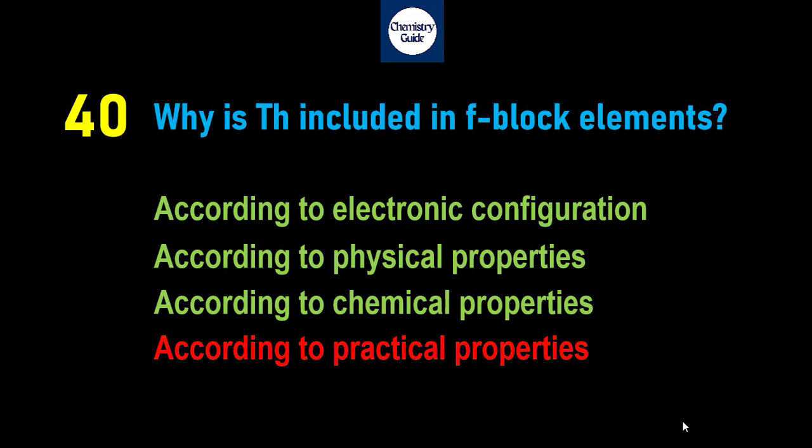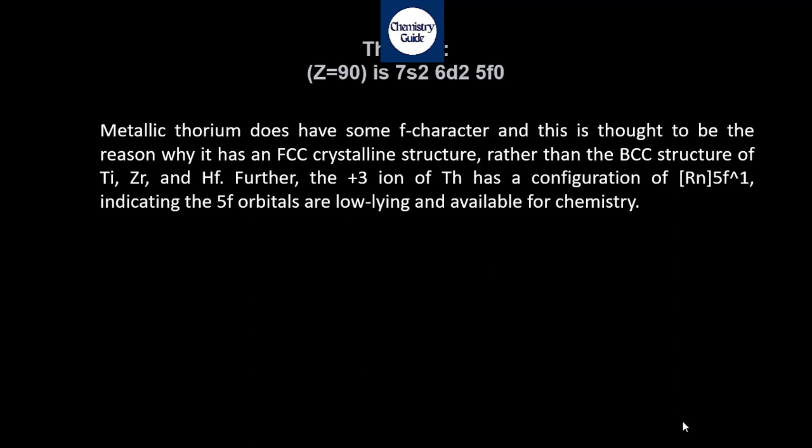If we observe the electronic configuration of thorium, it is not compatible with F-block elements. We can observe that thorium has atomic number 90 with radon core, then 7s2, 6d2, and 5f0.